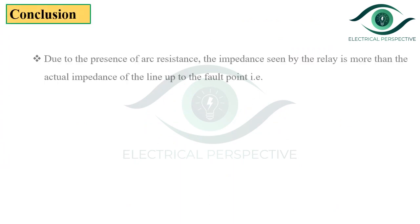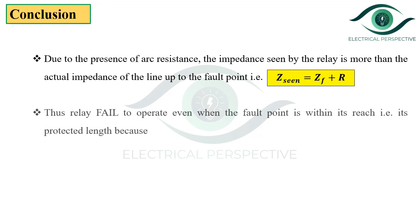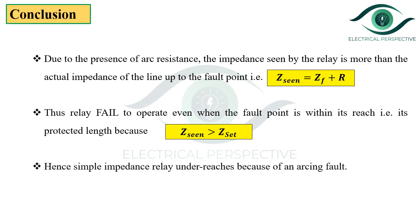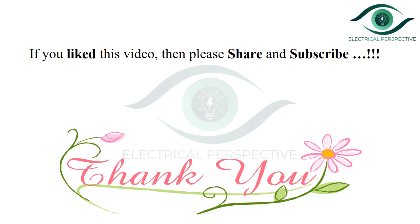These are the conclusions. Due to the presence of arc resistance, the impedance seen by the relay is more than the actual impedance of the line up to the fault point — that is, Z_seen = ZF + R, where R is the arc resistance. Thus the relay fails to operate even when the fault point is within its reach, because Z_seen is greater than Z_set. Hence the simple impedance relay under-reaches because of the arcing fault. If you like this video, please share and subscribe. Thank you.